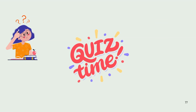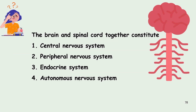Now before concluding the video, let us check your knowledge. The brain and spinal cord together constitute: 1) central nervous system, 2) peripheral nervous system, 3) endocrine system, or 4) autonomous nervous system. The answer is the central nervous system — the brain and spinal cord together are part of the central nervous system.